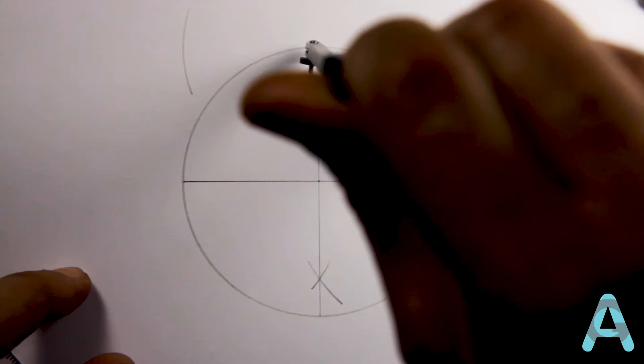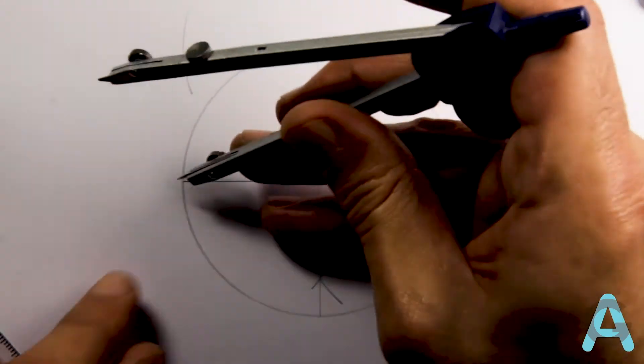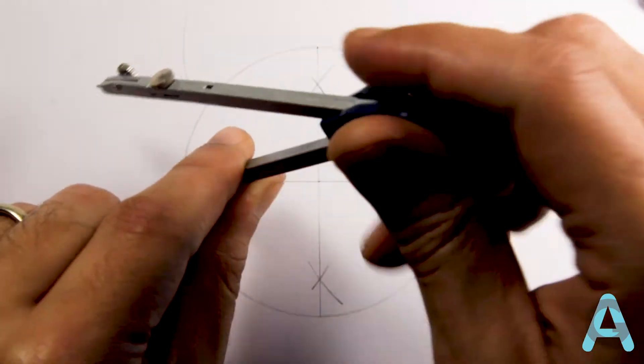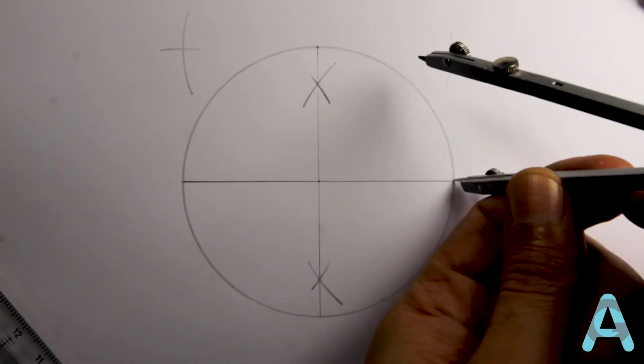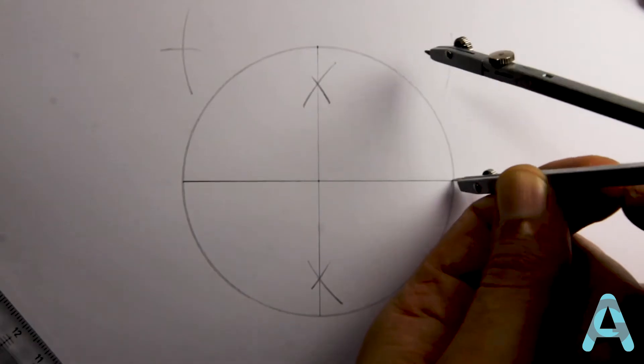Then, we'll change the needle to this point and do another small arc. Then, we'll change the needle to this point and repeat the operation.